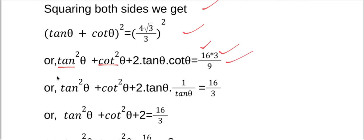So we have tan²θ plus cot²θ plus 2·tan θ·cot θ equals 16/3. We know that cot θ equals 1/tan θ, so tan θ · cot θ equals 1.